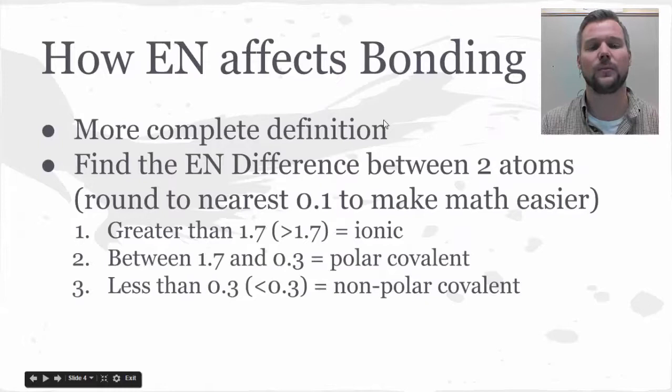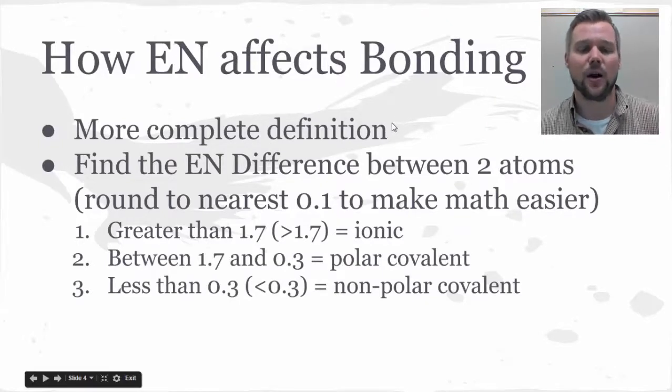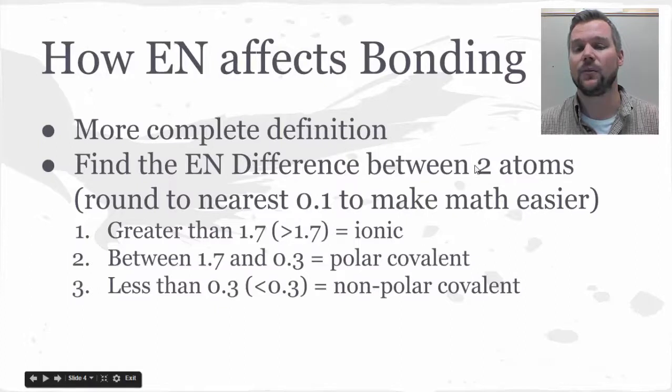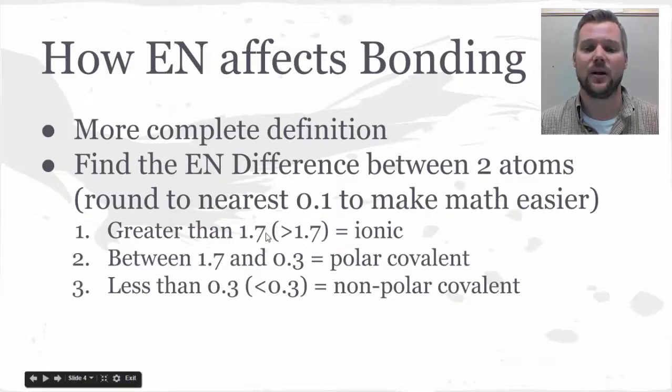So we've already talked about it being a more complete definition of how a bond actually behaves. Here are your steps. You're going to find the electronegativity difference, so subtract, between the two atoms that are inside that bond. And when we're subtracting, we're always going to have our answer be positive, so big minus small. Now, if your difference is greater than 1.7, it's going to be an ionic bond.